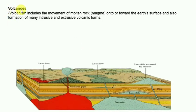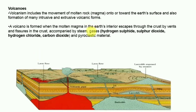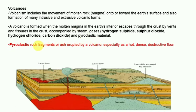Volcanism includes the movement of molten rocks — magma — onto or toward the earth's surface and the formation of many intrusive and extrusive volcanic forms. A volcano is formed when molten magma in the earth's interior escapes through the crust by vents and fissures, accompanied by steam and gases like hydrogen sulfide, sulfur dioxide, hydrogen chloride, and carbon dioxide.